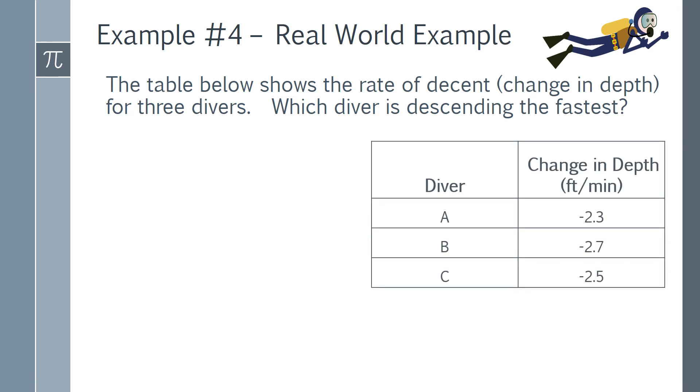We have diver A at a rate of negative 2.3 feet per minute, diver B at a rate of negative 2.7 feet per minute, and diver C at a rate of negative 2.5 feet per minute.